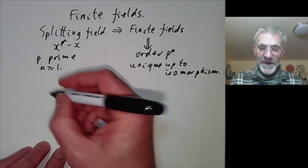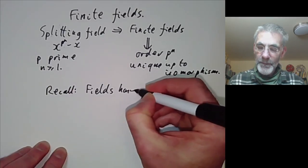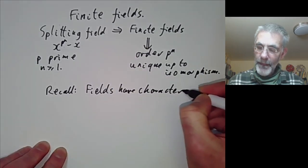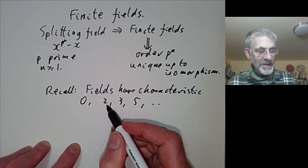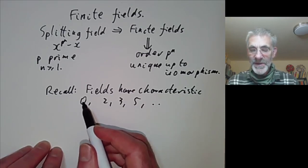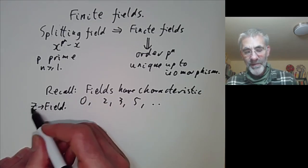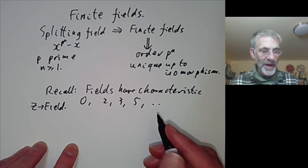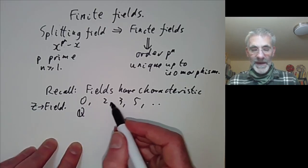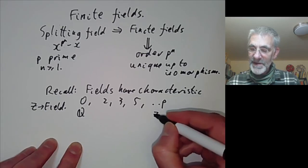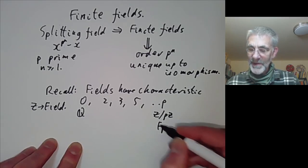Let's first do the easy stuff. Fields have a characteristic which is either 0 or a prime greater than 0. The characteristic is the kernel of the map from Z to the field; the kernel must be a prime ideal so it's either generated by 0 or by a prime. If the field has characteristic p it contains Z mod pZ, which is the finite field of order p, sometimes denoted F_p.